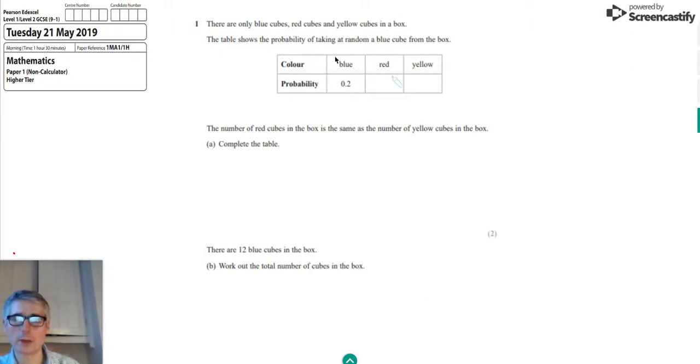So it's a question about probability and we've got a probability table here. We're told there are only blue cubes, red cubes and yellow cubes in a box. And we've got a table for the probability of taking a random cube out from the box. And what we've got to try and do is complete this table.